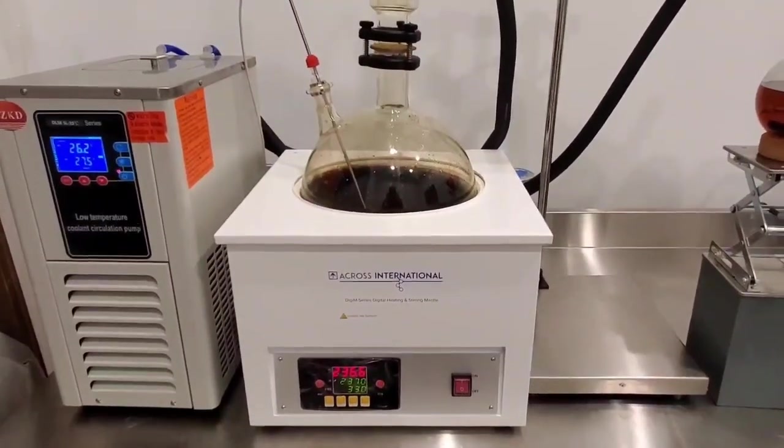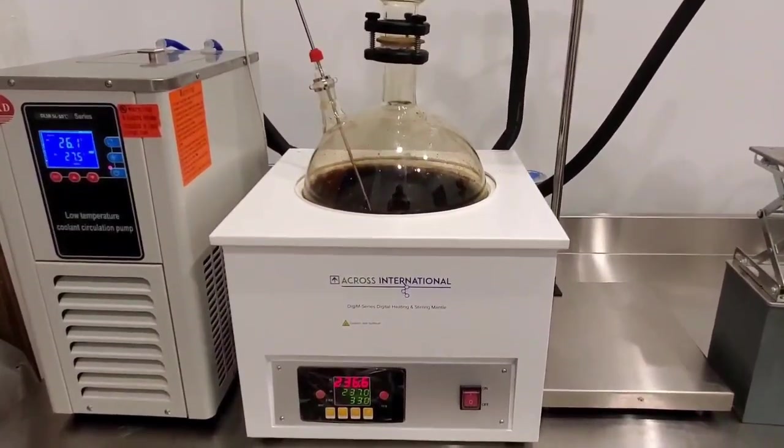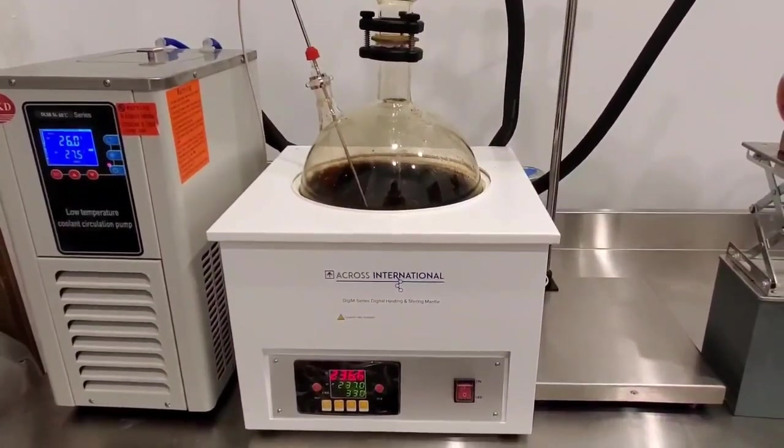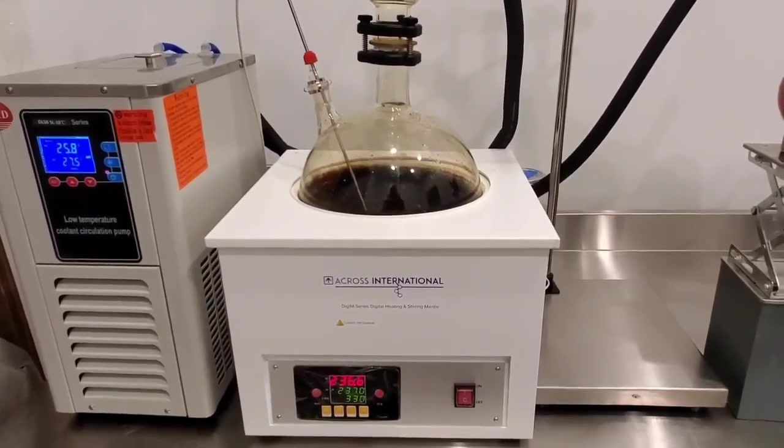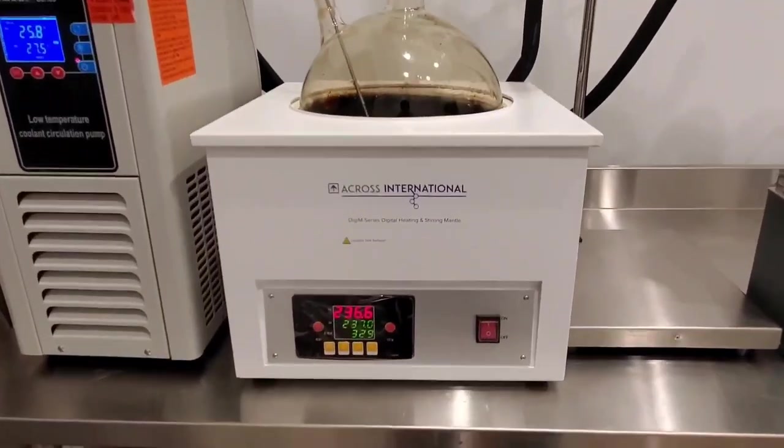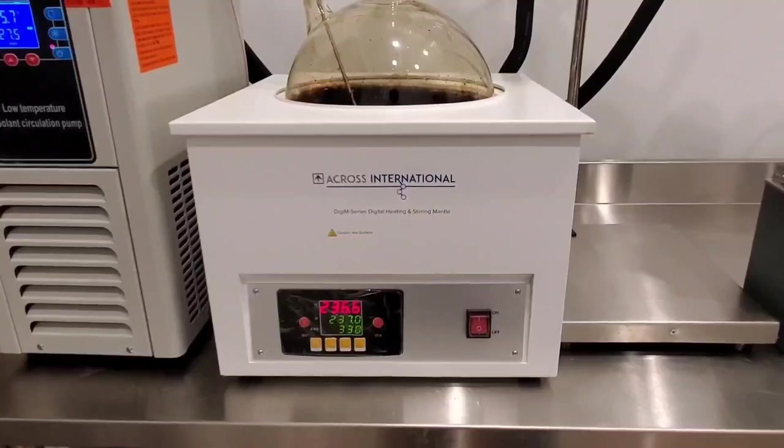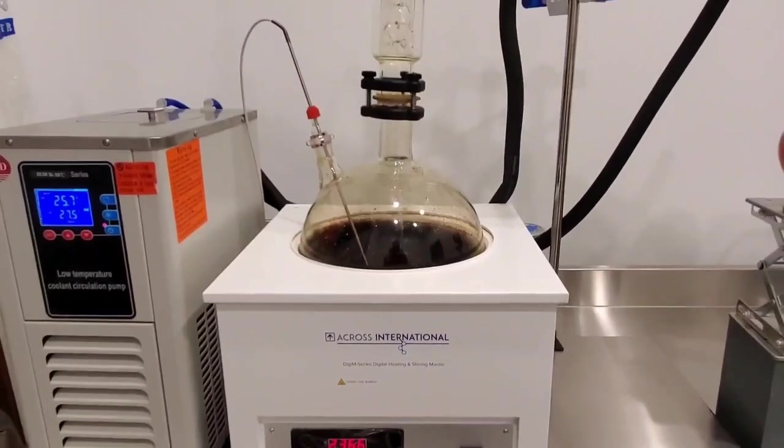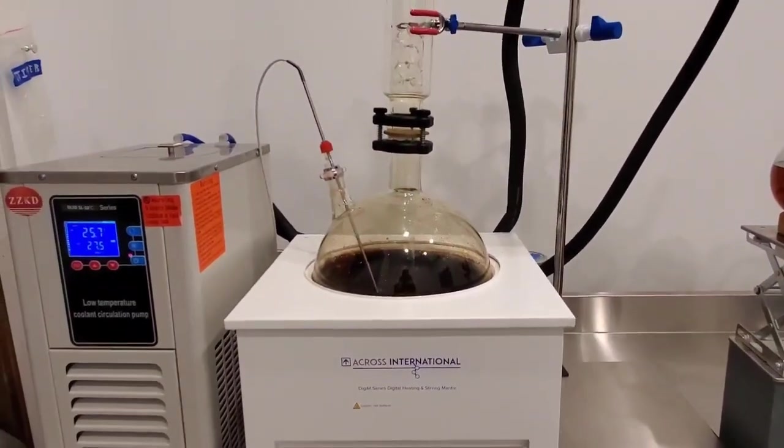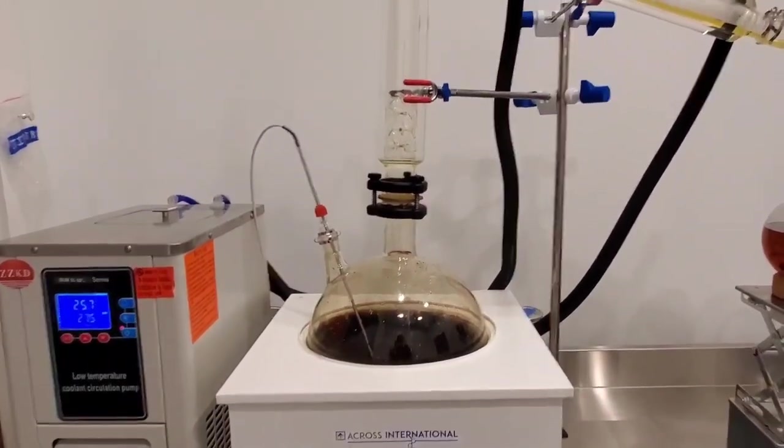As mentioned, we have a boiling flask here inside of a digital heating and stirring mantle. We put crude oil in here and stir it at specific settings. As you can see here below, we have it at 330 RPM and 237 degrees Celsius. And what that does is heats up the cannabinoids to the point of vaporization. They turn into vapors.